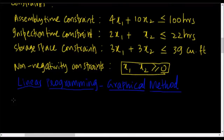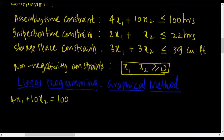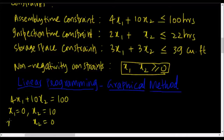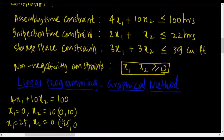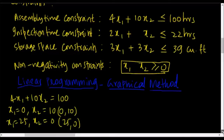I will first take the first constraint — the equation part: 4x1 plus 10x2 equals 100. To plot any straight line I need two points. I'll get those two points by inserting x1=0 to get x2=10, and inserting x2=0 to get x1=25. So my two points for this line are (0, 10) and (25, 0).